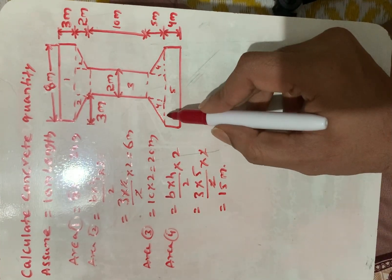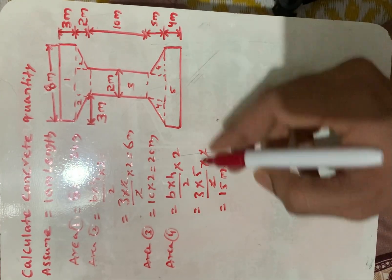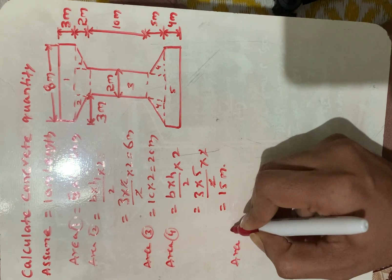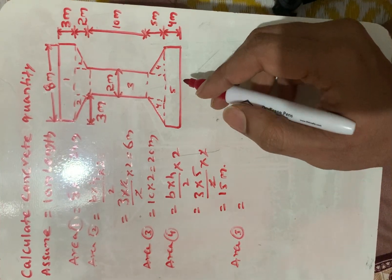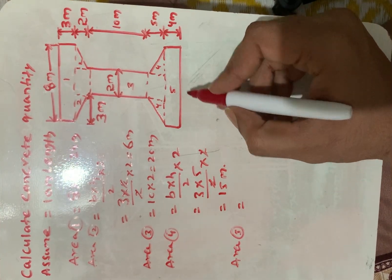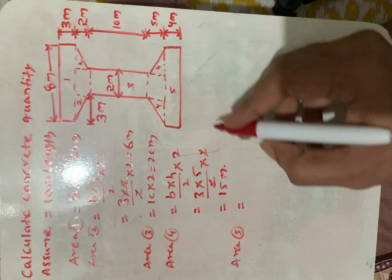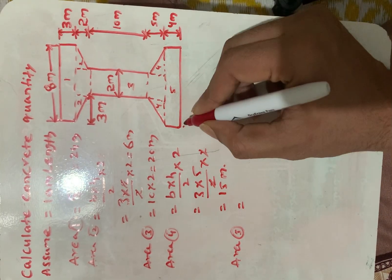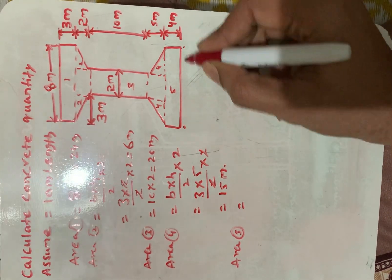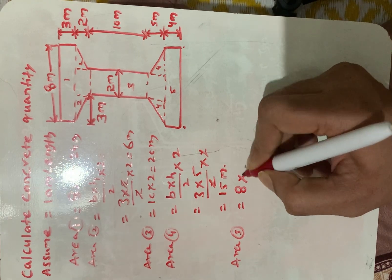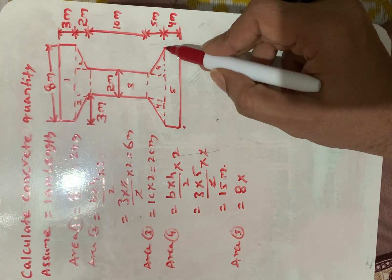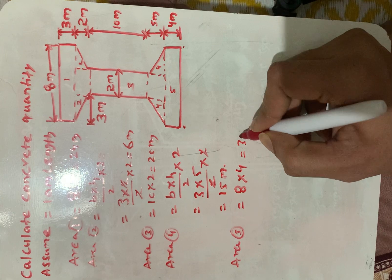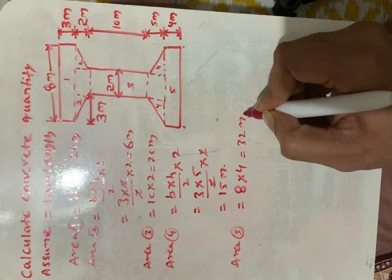Next is section 5. The area of the fifth section is also a rectangle. The length from this point to this point is 8 meters and the width is 4 meters. So 8 × 4 = 32 square meters.